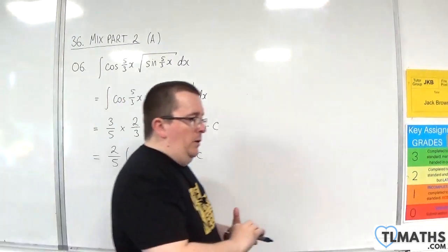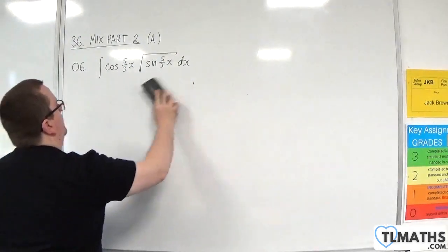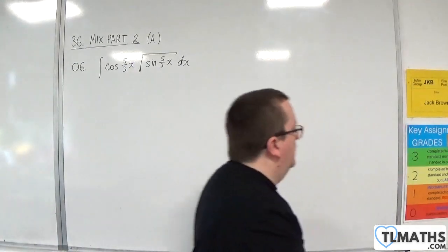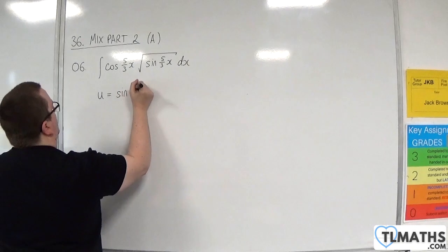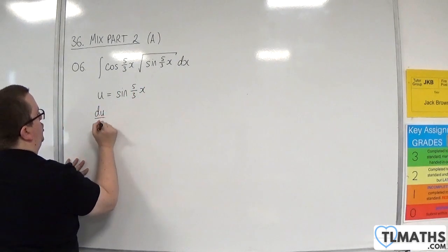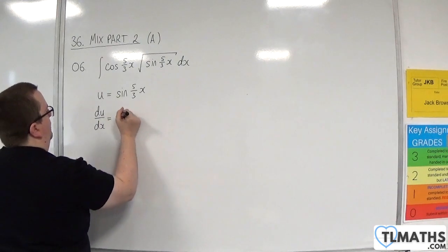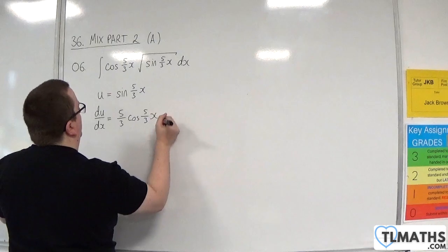Use u is equal to sine of 5 thirds x. So I will do that now, just so that you can see how that works. So u is equal to sine of 5 thirds x.